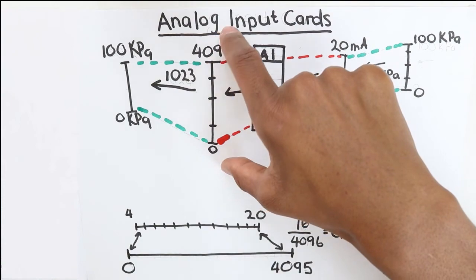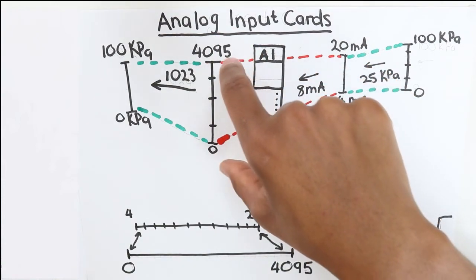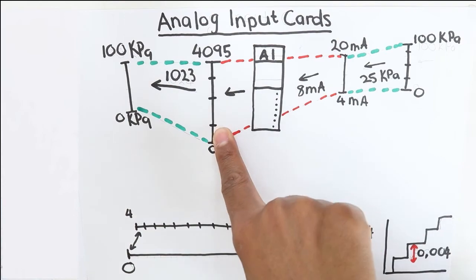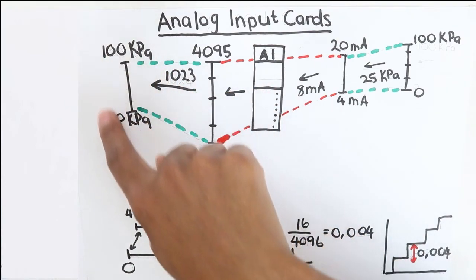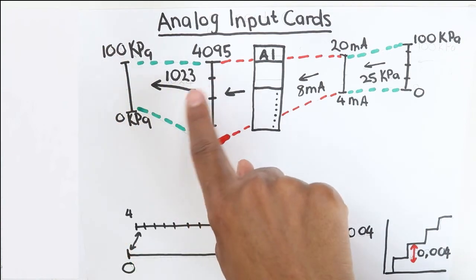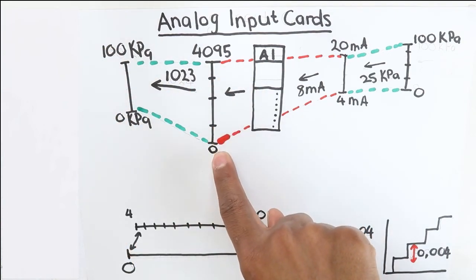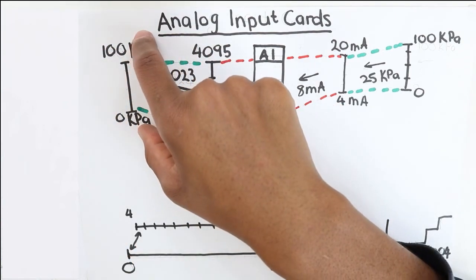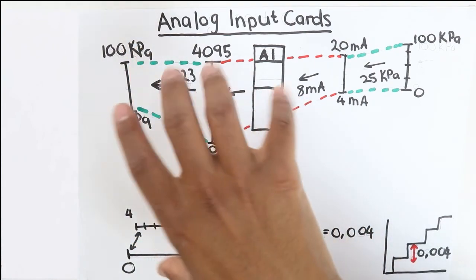And then the card will convert that value to 0 to 4095, and then once it's at 0 to 4095, you can then write a section of code in your PLC program to then convert this value from 0 to 4095 to 0 to 100 kPa.